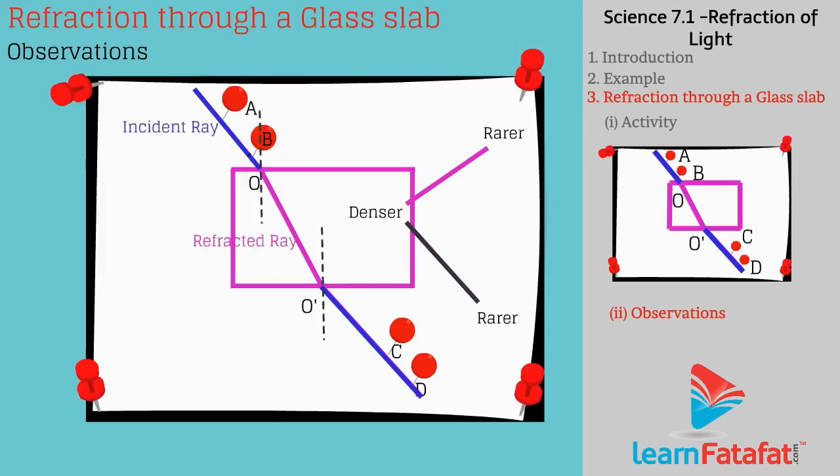The angle made by incident ray with the normal is called as angle of incidence. And the angle made by refracted ray with the normal is called as angle of refraction. The angle made of emergent ray with normal is called as angle of emergence.